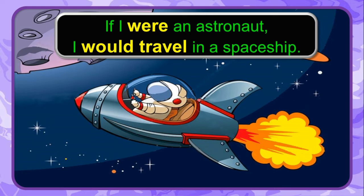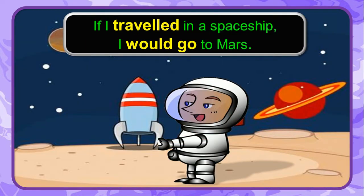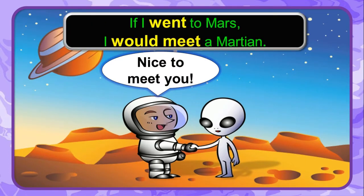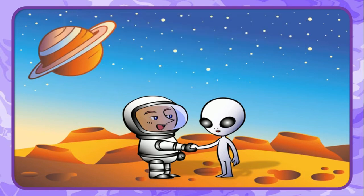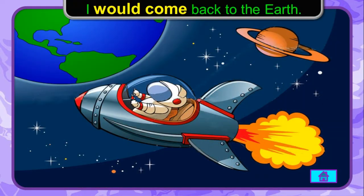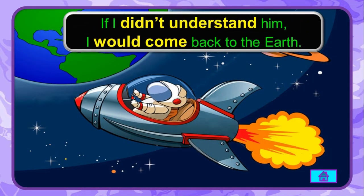Another example of the second conditional chain: if I were an astronaut, I would travel in space. If I traveled in space, I would go to Mars. If I went to Mars, I would meet a Martian. If I didn't understand him, I would come back to the Earth.